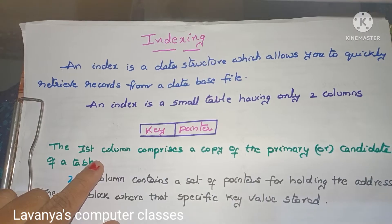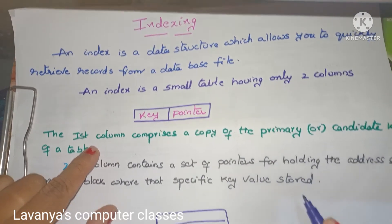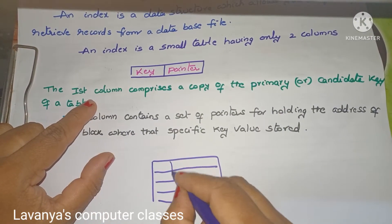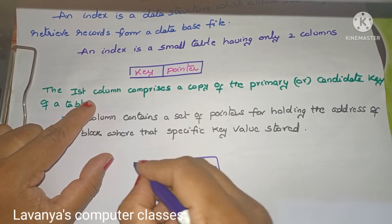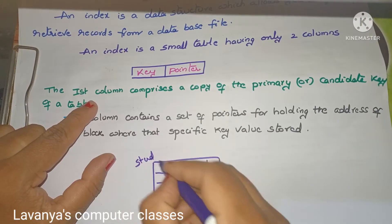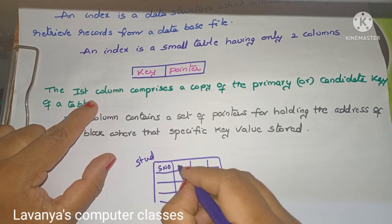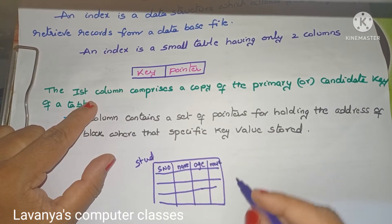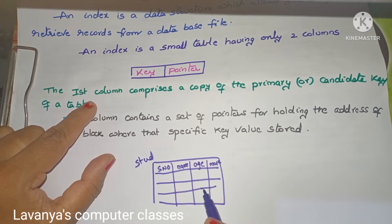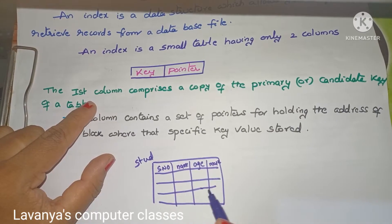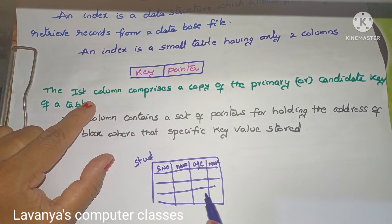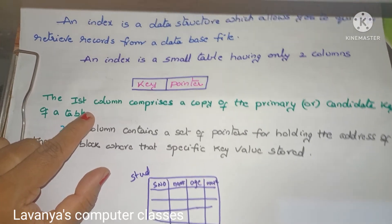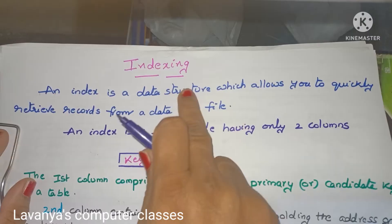For example, this is a database — a collection of records. In a student database, you have so many records like serial number, name, age, marks. If you want to retrieve any information from this database, there are many methods, but to easily and quickly retrieve information, we use the concept of indexing.